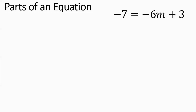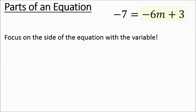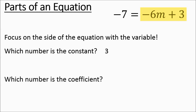So here's another one. We're going to tune into the right side of the equation sign, because that's where the variable is. The constant is going to be the 3. The coefficient is going to be the negative 6 — notice how I'm including that negative sign in front of it.